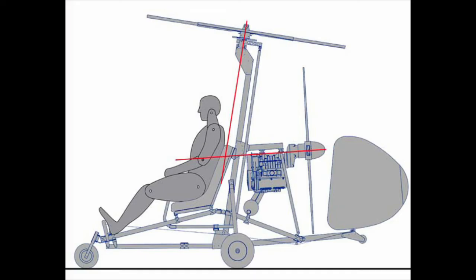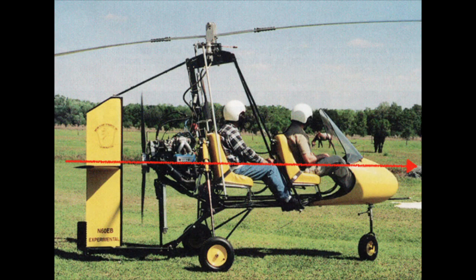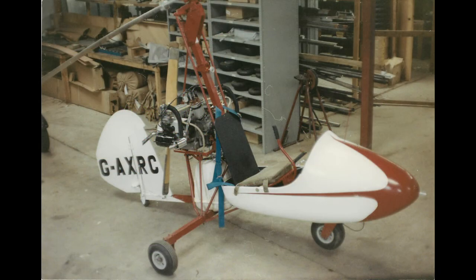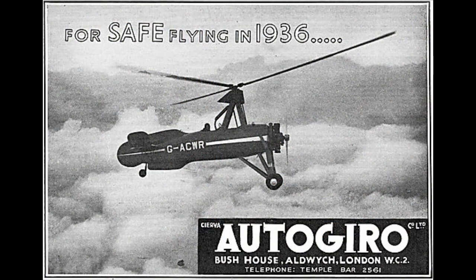Some of you are thinking that centerline thrust was all the result of the Glasgow University dynamics study kicked off in the mid-90s, or a result of Rotor Flight Dynamics' Dominator of 1988. Except Peter Lovegrove beat them with his Cricket by about 20 years, and Juan de la Cierva beat him by almost 50 years. I guess it just shows that good design is, well, just good design.